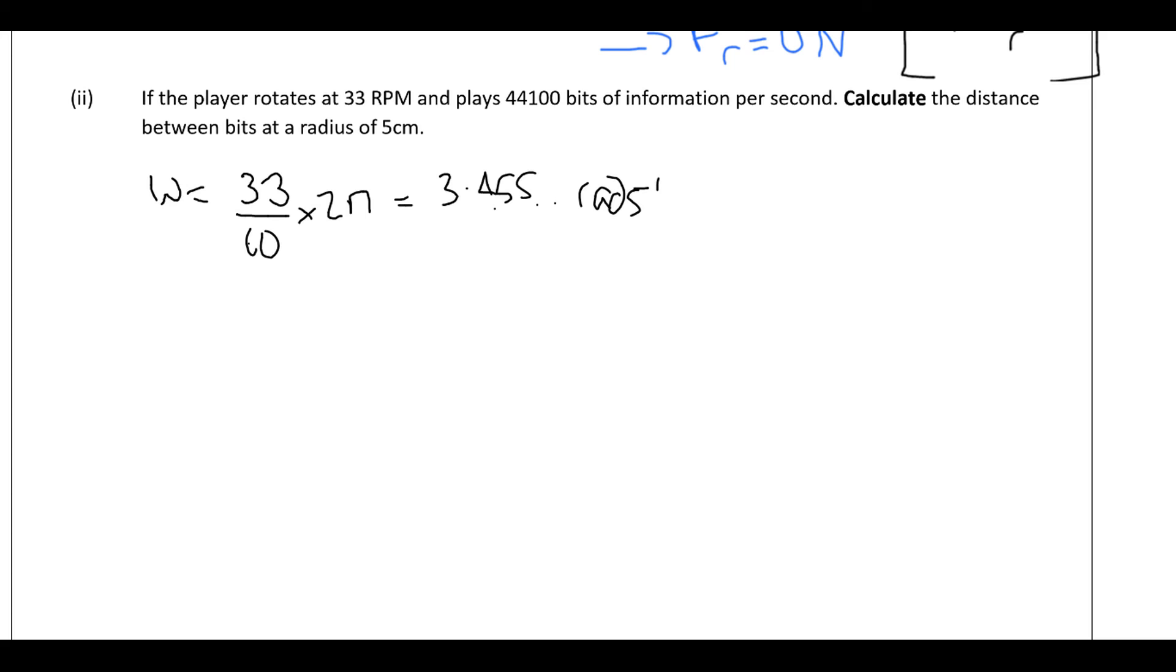Ok, so what we're going to try and do now is work out the number of radians per bit of information. Because then once we've got that we can turn that into a distance. So to get that what we're going to do is the radians per second divided by the bits per second is what that will end up cancelling. So the seconds will end up cancelling out so you get radians per second on the top line, bits per second on the bottom line and then we'll end up with radians per bit. So when we do that, let's divide by 44,100 gives us 7.836 times 10 to the minus 5 radians per bit.